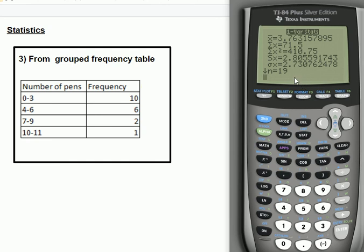The first check is N needs to be 19, which is absolutely fine. N is 19. There are 19 numbers; if you want to check, you can do 10 plus 6 plus 2 plus 1. X bar, which is the estimate for the mean, is here, the very first bit of data. So the mean number of pens in the pencil case for these 19 people surveyed is 3.76 pens, which is three significant figures.